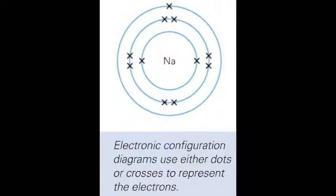Diagrams are not the only way to show electronic configuration. They can be written out instead. For sodium, this is 2, 8, 1. Each number shows how many electrons there are in each shell. This method of showing electronic configurations is easy to write and to understand.